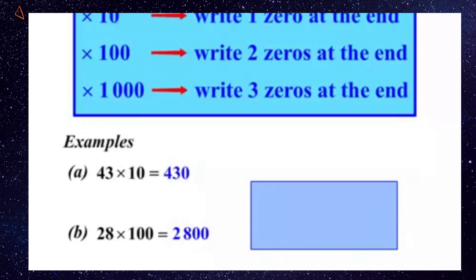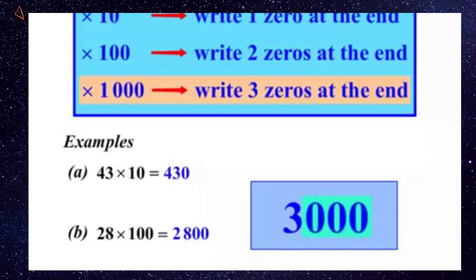The next one: 3 times 1000. Well, you might already know the answer to that, but let's see how the rule works. Let's write the 3 down. And we're multiplying by 1000, so we're going to write three zeros at the end. So our answer there is 3000. You probably already knew the answer before we did that.